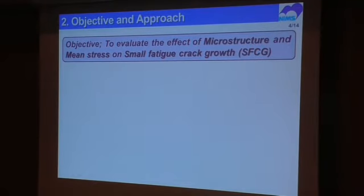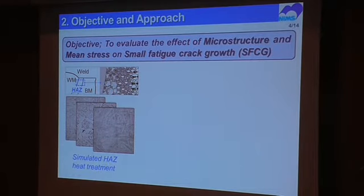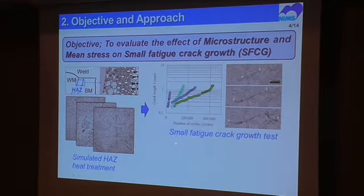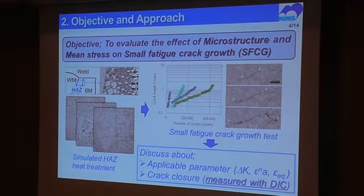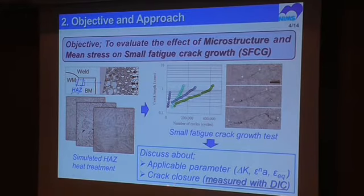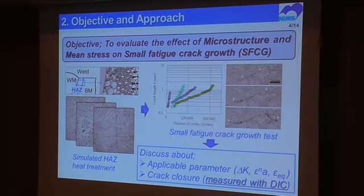The objective of this study is to evaluate the effect of microstructure and mean stress on small fatigue crack growth rate. For this purpose, we prepared simulated heat-affected zone specimens by heat treatment. We conducted the small fatigue crack growth test, and I will discuss applicable parameters to correlate the small fatigue crack growth rate, such as ΔK, epsilon equivalent 2Na, and so on. We will also discuss the closure effect, and I will show the DIC — digital image correlation — technique to detect the crack opening point for small cracks.